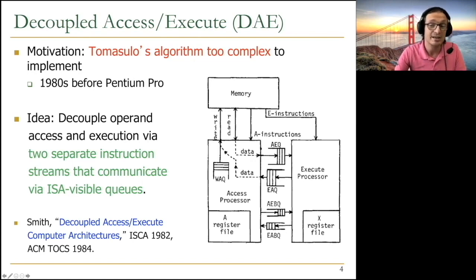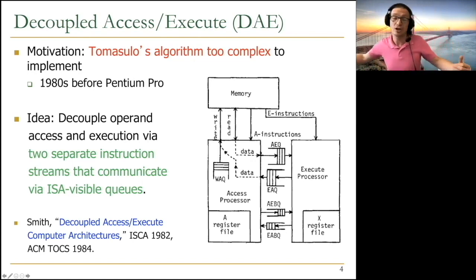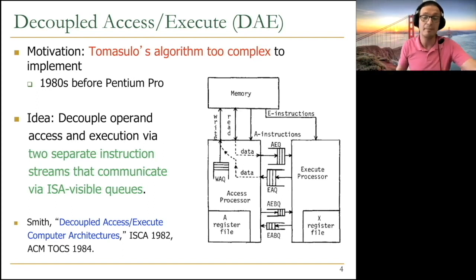As a result, the length of the queues determine how much latency you can tolerate on the memory side, as well as on the execute side. So these queues, the good part is these queues can be very scalable. They're not like the tag matching logic reservation stations. Reservation stations are hard to scale. Load store queues are hard to scale. Whereas here, queues can be scalable because it's a FIFO queue.